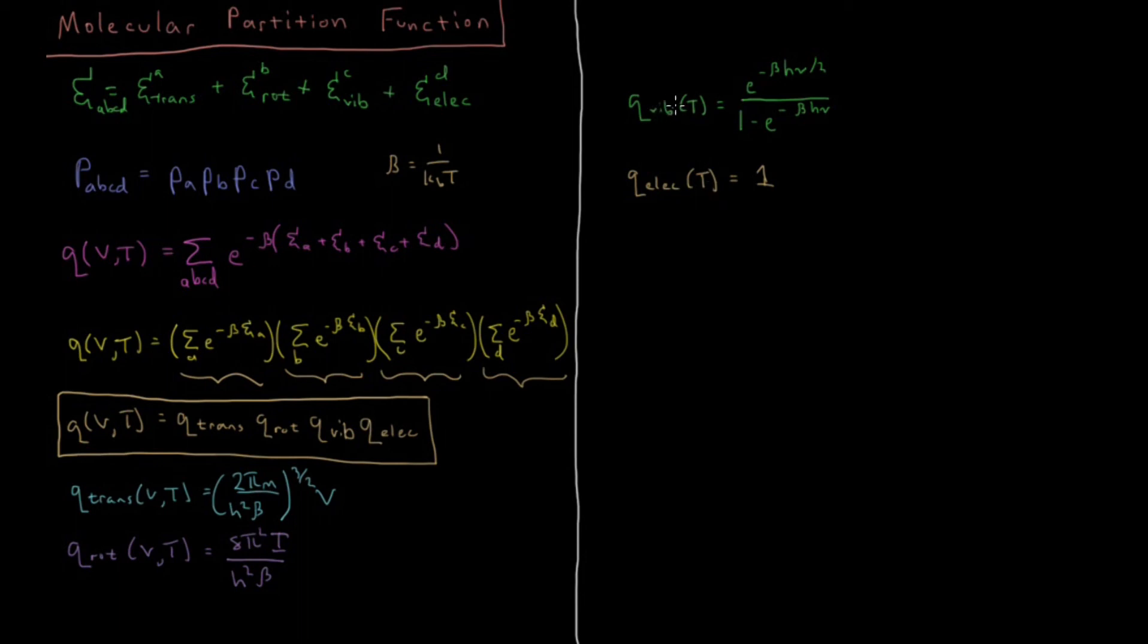Typically this vibrational partition function is also near the ground state. It's also very near 1 unless you start getting up to very significant temperatures relative to this frequency. Typically there's a handful of rotational states occupied. And as we said, typically there are many, many, many translational states which are occupied at typical room temperatures.